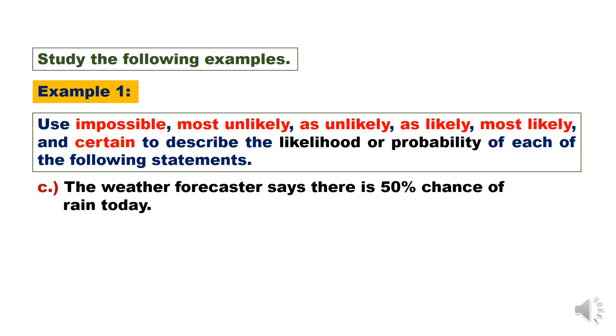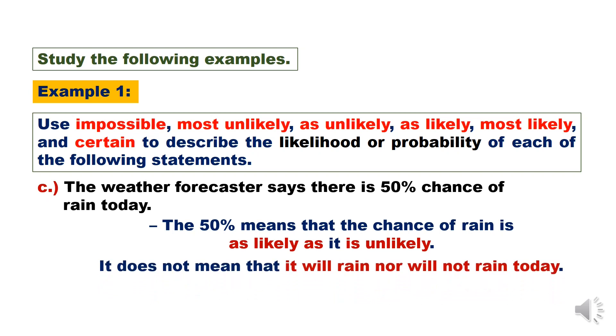C. The weather forecaster says there is 50% chance of rain today. The 50% means that the chance of rain is as likely as it is unlikely. It does not mean that it will rain nor will not rain today.